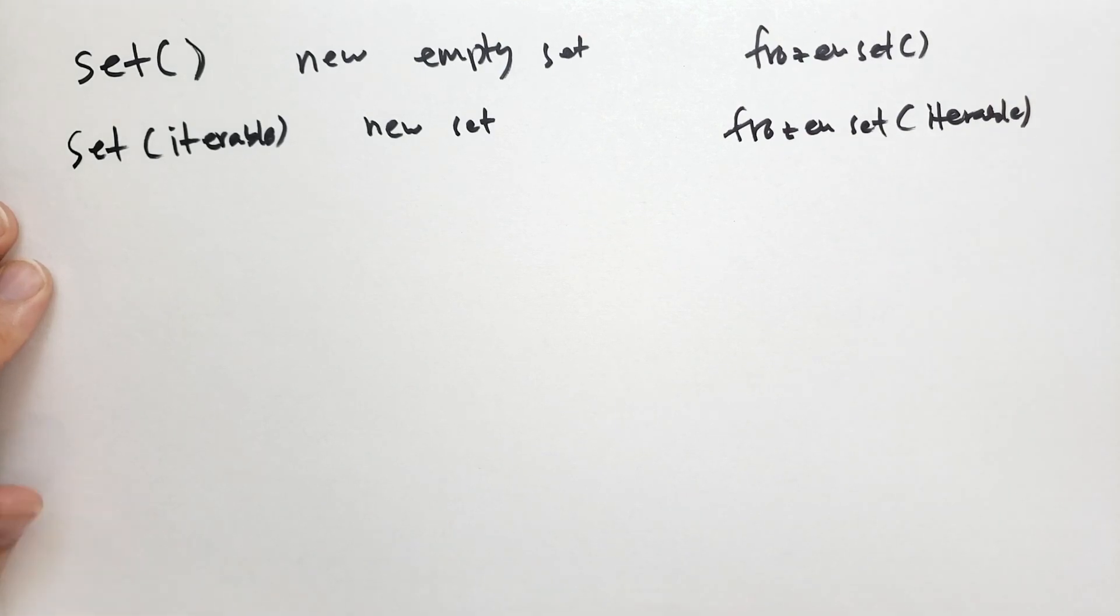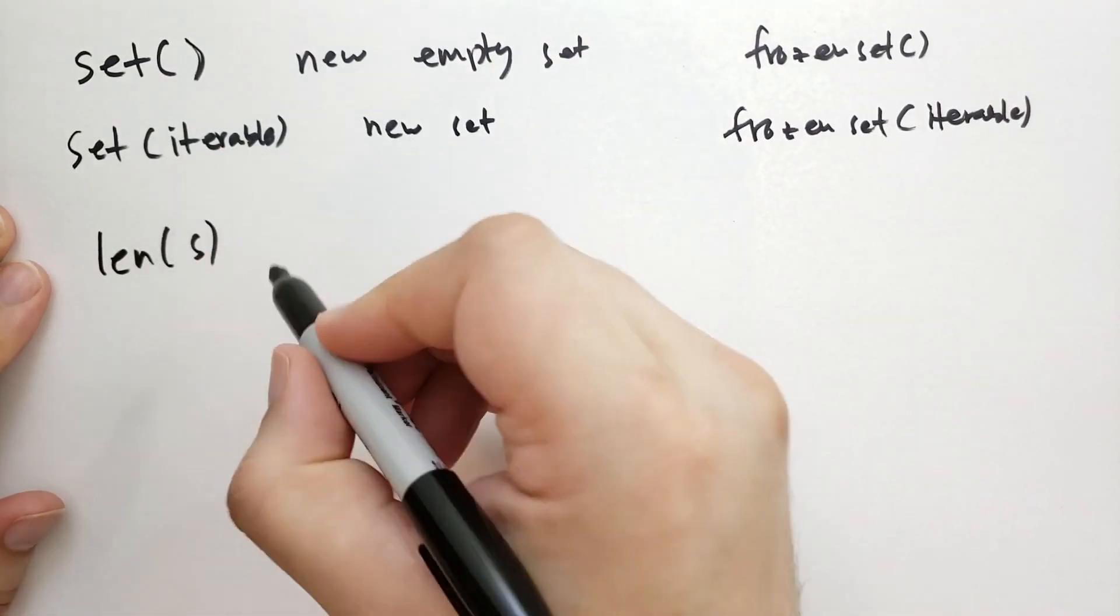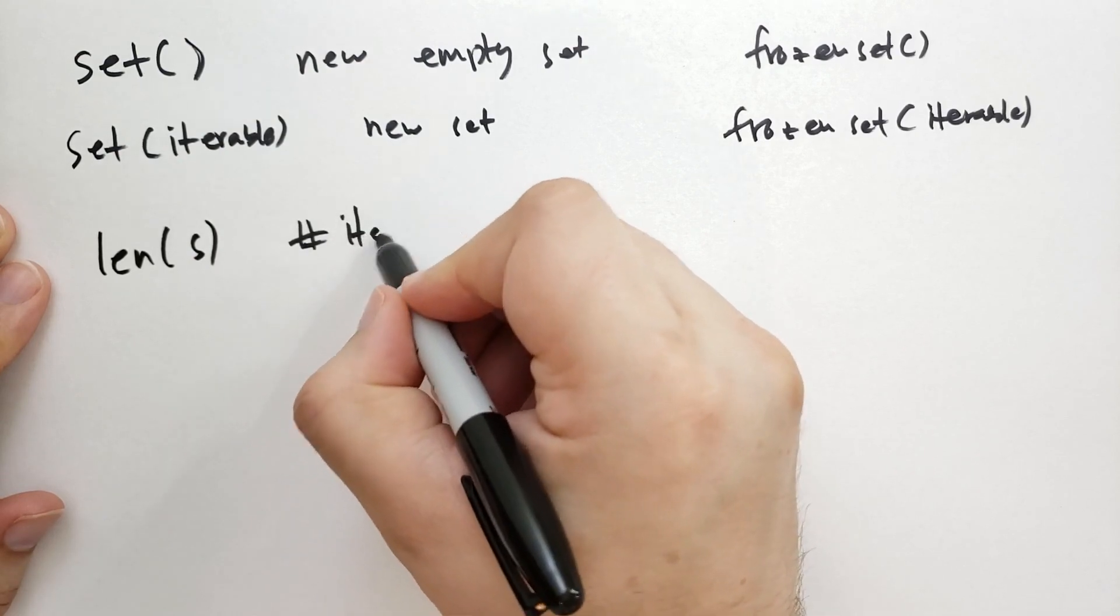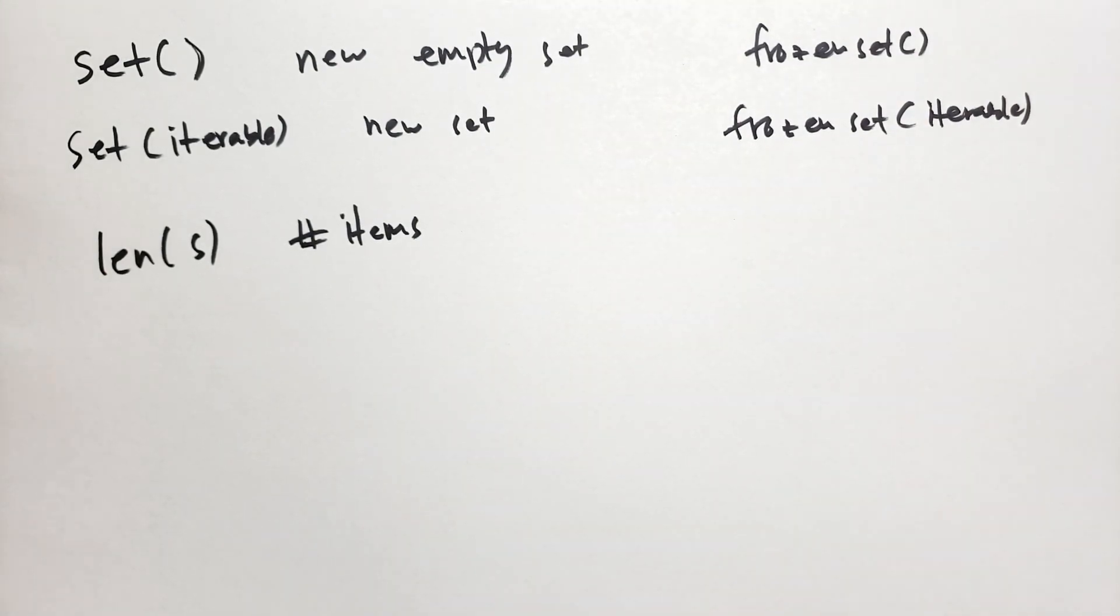OK, then we have len of a set will tell you the number of items. And the other operators that deal with iterables will also work with sets. OK, the order of the items in the set may not be what you expect, but it will give them all eventually.